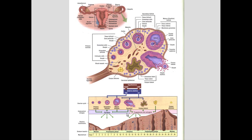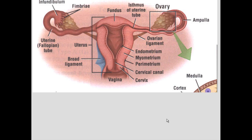Here we see the different parts of the female reproductive tract: the ovaries, fallopian tube, uterus, cervix, and the vagina. The ovary is the one that produces the gametes and also produces hormones — estrogen and progesterone — that regulate the growth and secretion of the uterus in preparation for offspring.